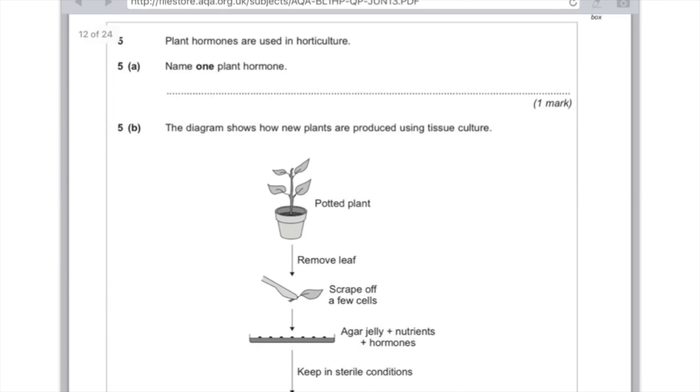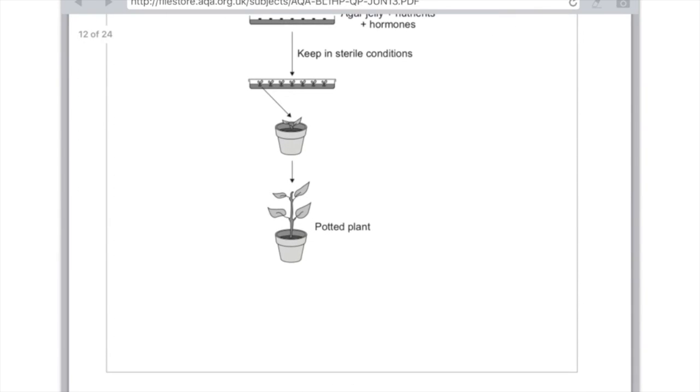Now I found a question which touches on tissue culture. Question 5: Plant hormones are used in horticulture. Name one plant hormone. Say auxin here. 5b: The diagram shows how new plants are produced using tissue culture. You have a potted plant, remove the leaf, scrape a few cells off of it, and then grow these cells on agar jelly using nutrients and hormones, and eventually we have a clone of the original potted plant.